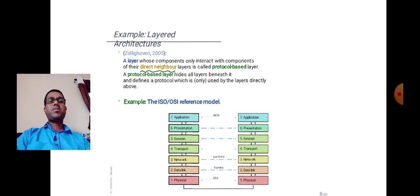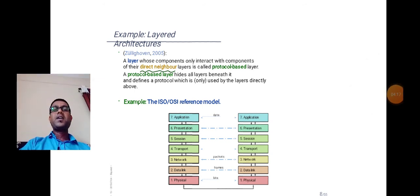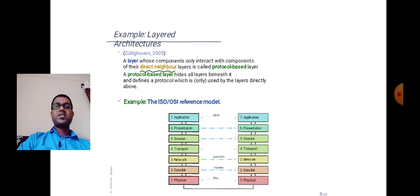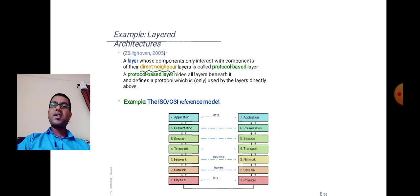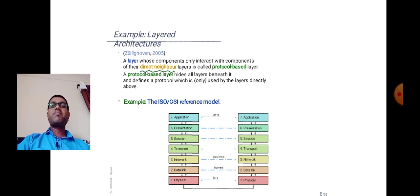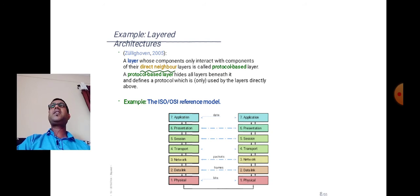Today, as an example, we will discuss the ISO OSI reference model to show us how structured layered architectures work. ISO stands for International Standards Organization and OSI stands for Open System Interconnection. Within this model there are seven layers.